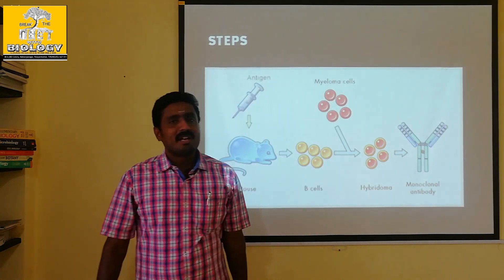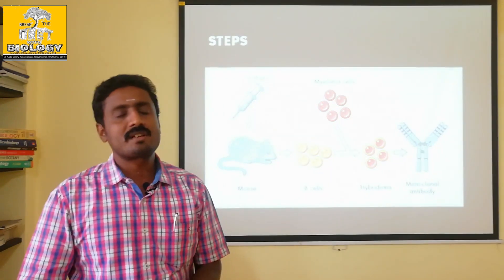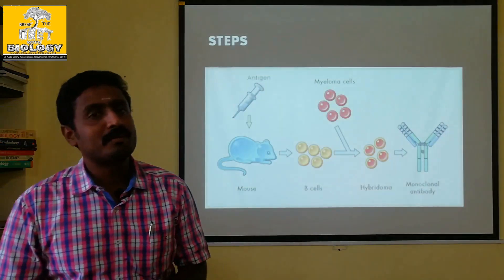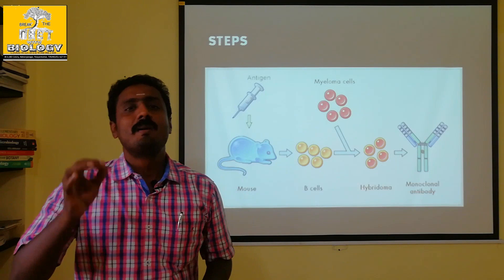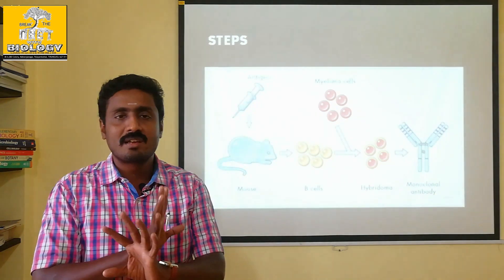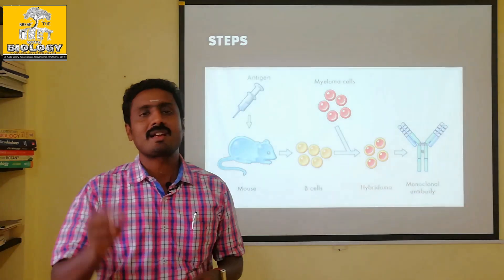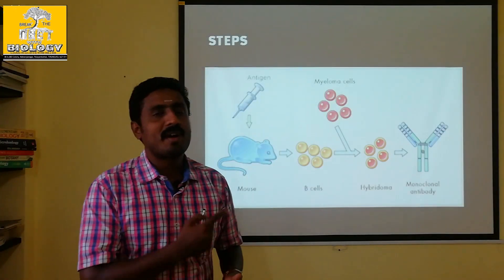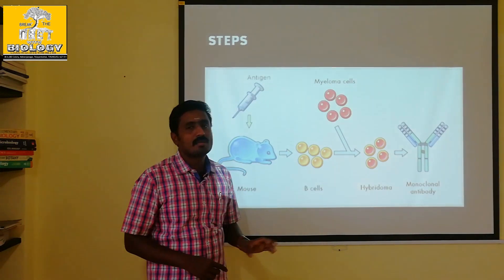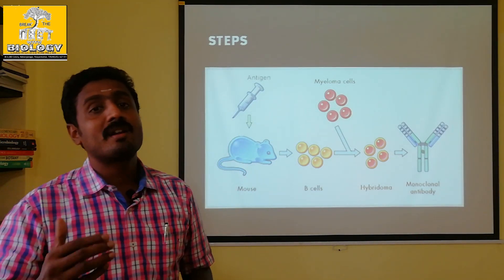Myeloma cells are cancer cells that continuously divide and multiply. These cancer cells continue to divide indefinitely. To produce monoclonal antibodies in large scale, we fuse B cells with myeloma cells. This fusion can generate several copies of antibodies — 1, 2, 3, 4, 5 copies — allowing large-scale antibody production.